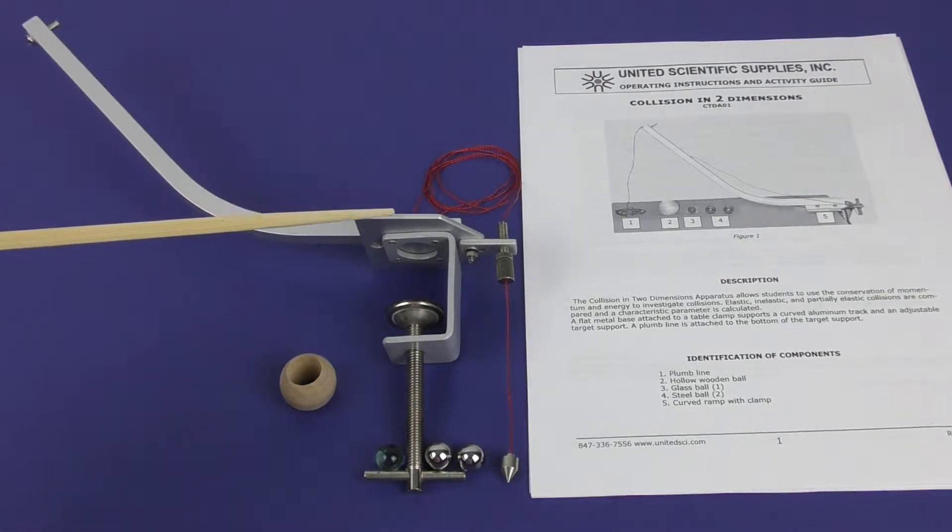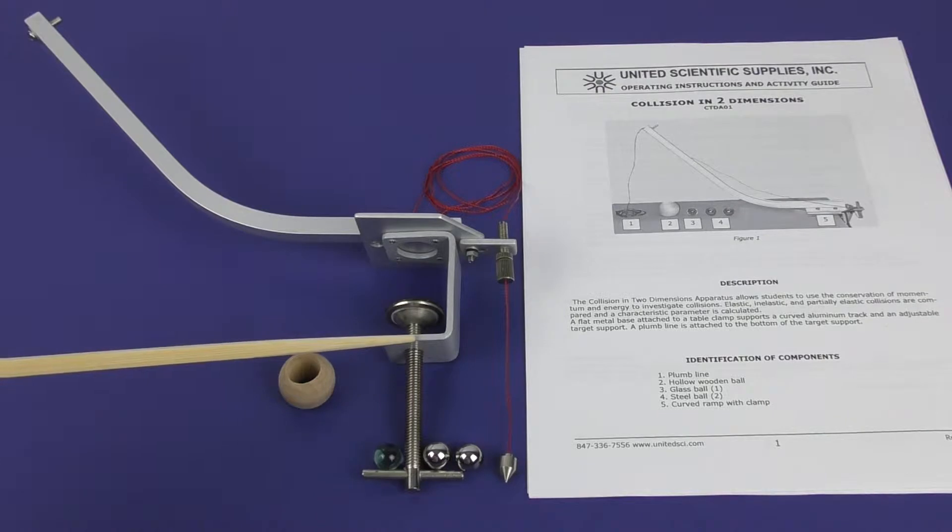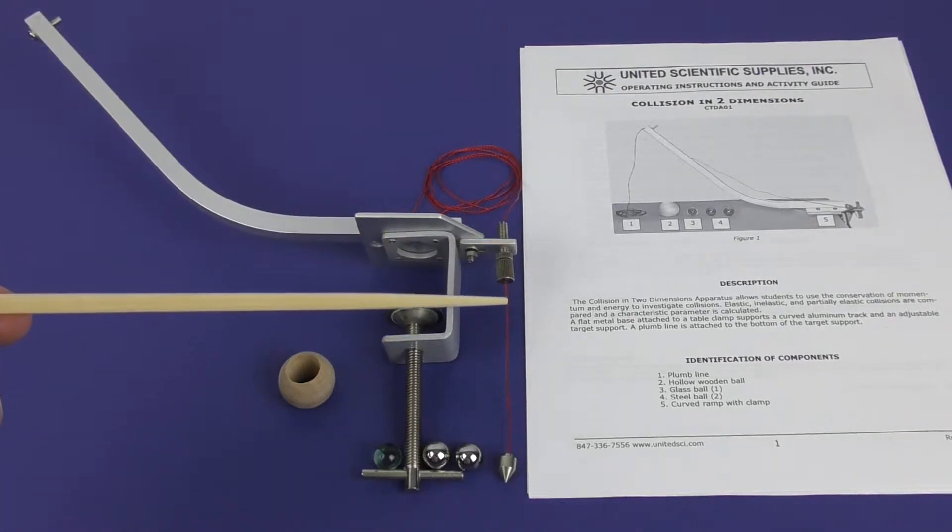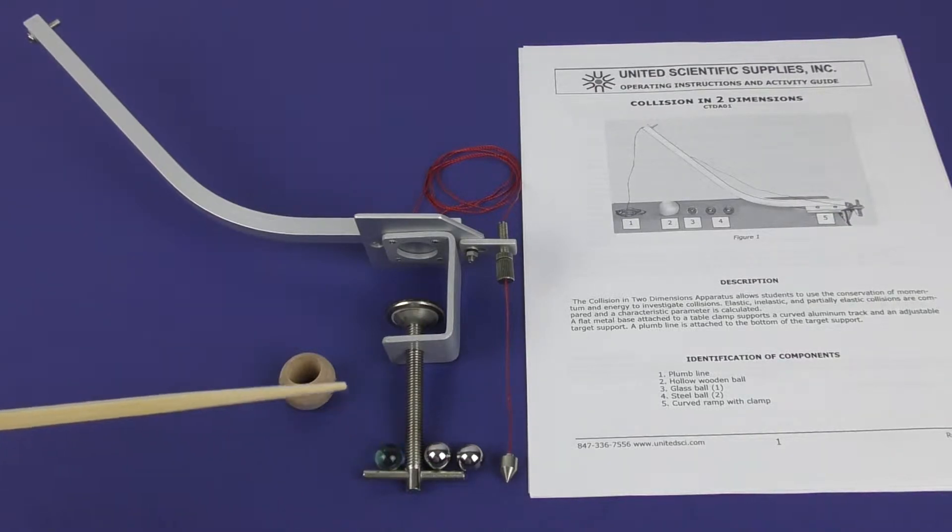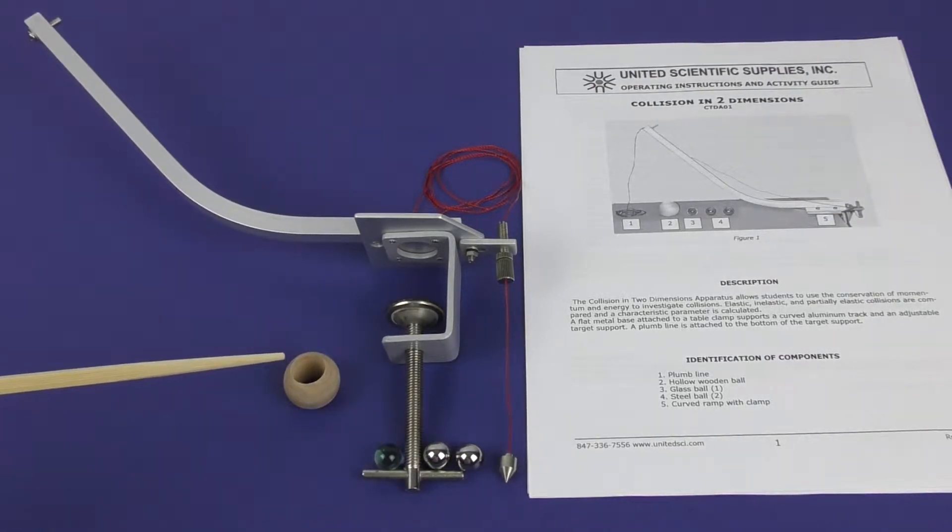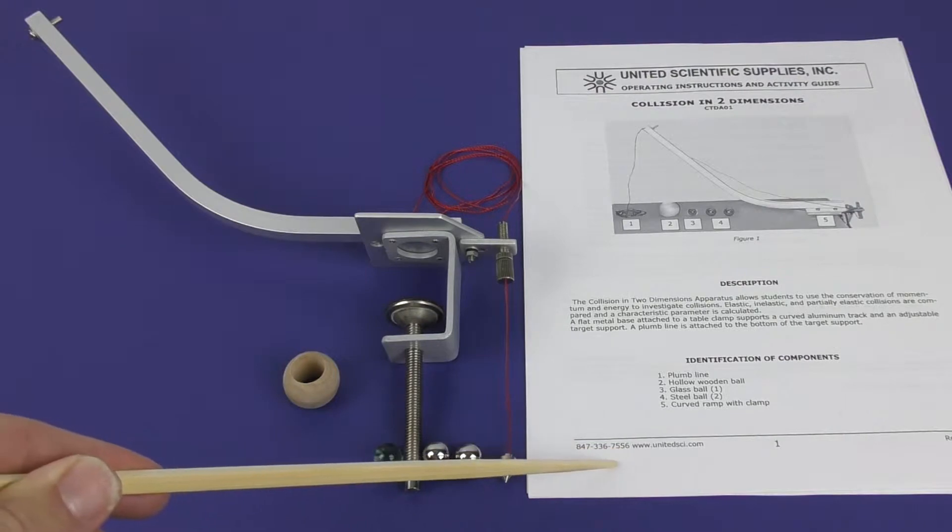The apparatus includes a curved track with an internal clamp, a long plumb bob line, a pair of steel balls, a glass ball, a hollow wooden ball, as well as a detailed activity guide.